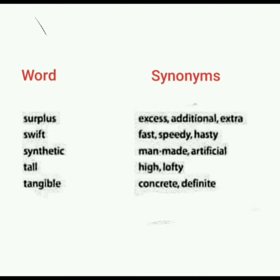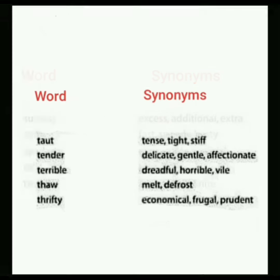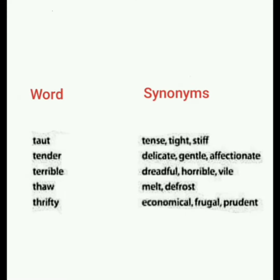Tangible means concrete or definite. Taut means tense, tight, or stiff. Tender means delicate, gentle, or affectionate. Terrible means dreadful, horrible, or vile. Thaw means melt or defrost.